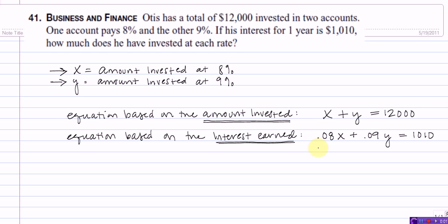We can actually neaten this second equation up just a little bit and get rid of those decimals by multiplying each piece by 100. And so, that second equation becomes 8X plus 9Y equals 101,000.